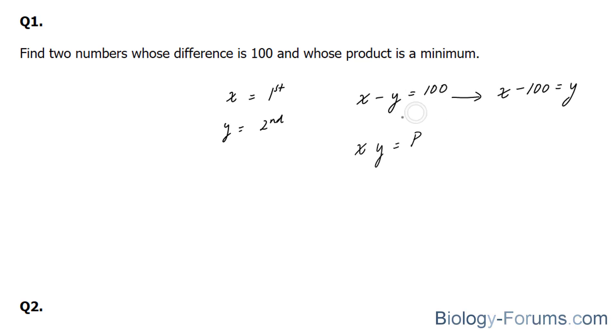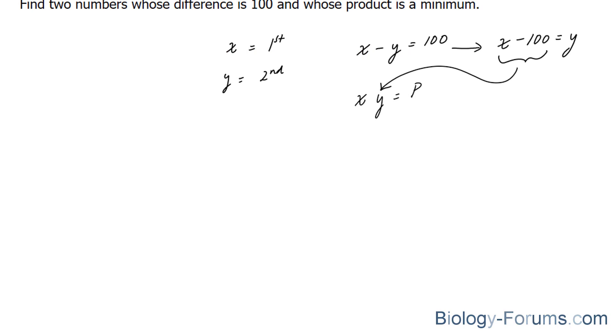So notice I took this y over and I brought this 100 over and I ended up with this. And like I said, you want to input what you found into your other equation. So let's apply this equation into this equation. And this gives us x times x minus 100 is equal to p. And I'll simplify the left side and this gives us x squared minus 100x is equal to p.